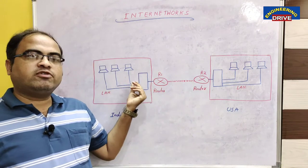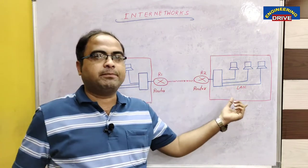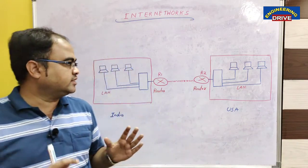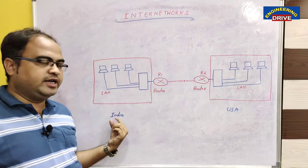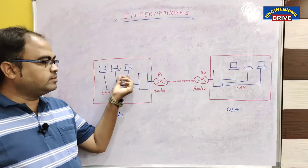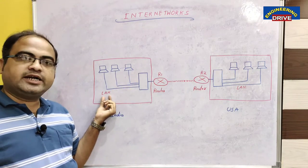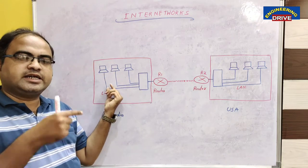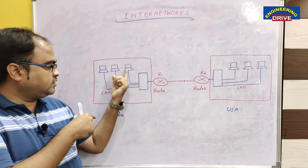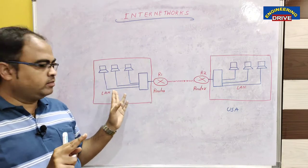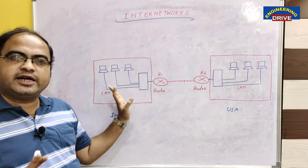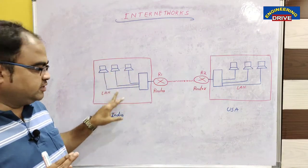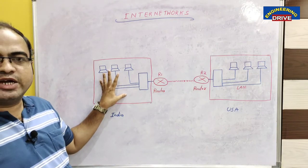Now the employees of branch India want to communicate with the employees of branch USA. The organization in India has a set of computers, and all these computers are connected with a local area network. The employees within the India office can communicate with each other without any problem because they are connected via LAN.